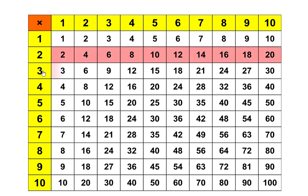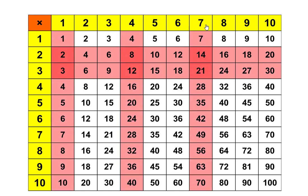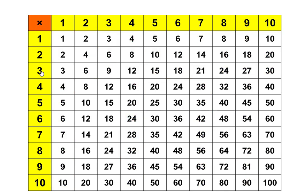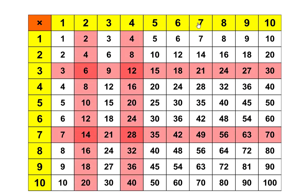Or if I think of the fraction 2 thirds, 2 thirds is equal to any of these: 8 twelfths, 14 divided by 21, 18 twenty-sevenths, and so forth. Or if I think of the fraction 3 sevenths, it's equal to 6 fourteenths, 12 twenty-eighths, or 21 forty-ninths.